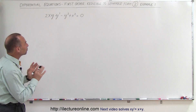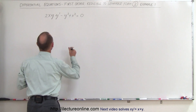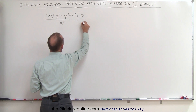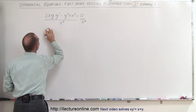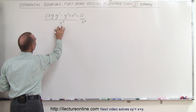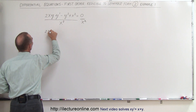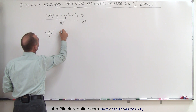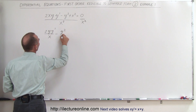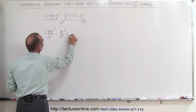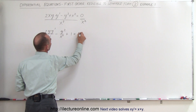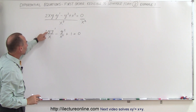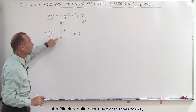Let's take this equation and divide both sides by x squared. So we're going to divide the left side by x squared and the right side by x squared. When we do that, we get the following: x divided by x squared gives us 2y·y' divided by x, minus y squared divided by x squared, plus 1, equals 0. Now you can see a y over x here and a y squared over x squared.